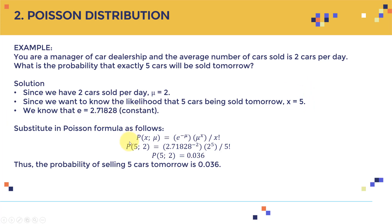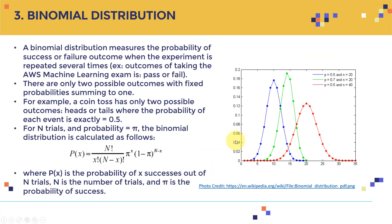E is the constant 2.718. Substituting into the Poisson formula: 2.718 to the power of minus 2, multiplied by 2 to the power of 5, divided by 5 factorial. This gives a probability of 0.036. So the probability of selling exactly five cars tomorrow is 0.036.